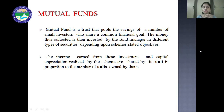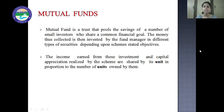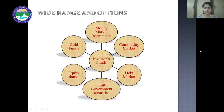The money collected is then invested by the fund manager in different types of securities depending on the stated objectives. So, a mutual fund is a trust or an organization that collects money from different investors, creates a pool of that money, and then the fund manager invests that money in different kinds of financial securities as per the scheme's objective. These securities include money market instruments, commodity market, debt market, government securities, equity shares, and gold funds.